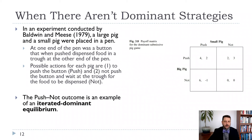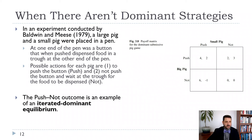First we want to think about whether there are dominant strategies. For the big pig: if big pig pushes versus doesn't push, we're comparing 4 and 6 versus 2 and 0. That's not a dominant strategy — 4 is less than 6, but 2 is greater than 0. For the small pig: if the big pig pushes, small pig chooses between 2 and 3 — not pushing is better. If the big pig doesn't push, small pig chooses between minus 1 and 0 — not pushing is again better. So not pushing is the dominant strategy for the small pig.